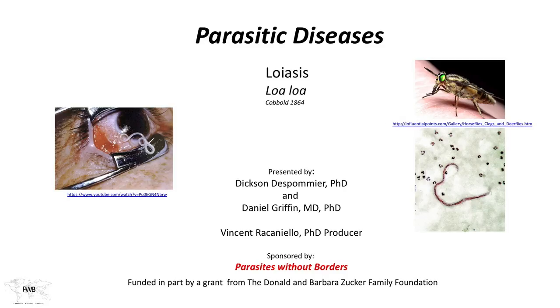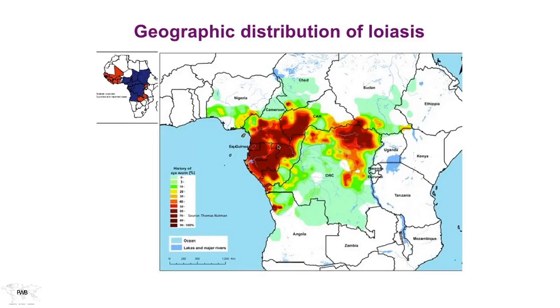Welcome to Parasitic Diseases. Today we're going to discuss loiasis, an infection caused by a filarial worm known as loa loa. Loa loa has a very narrow geographic distribution. It's an infection found in both West Africa and Central Africa, along the equator. That's basically where this infection and its consequences are found.